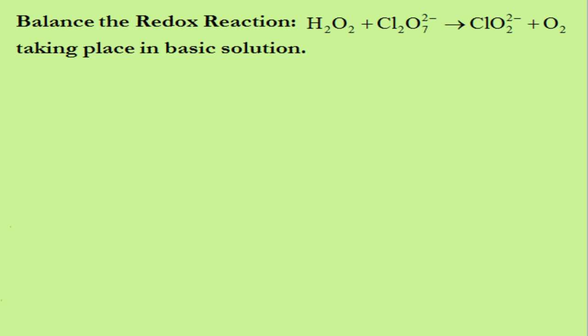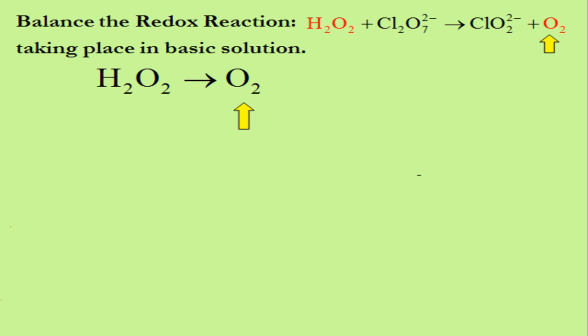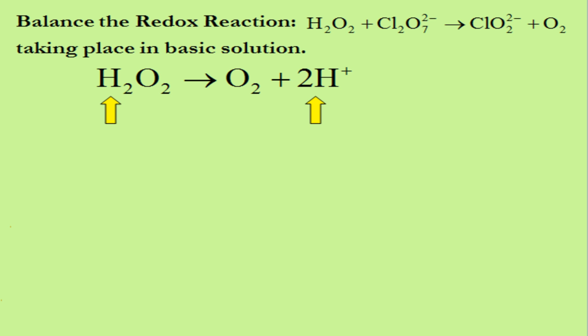We start by breaking this reaction up into two half-reactions. The H₂O₂ on the left forms O₂ on the right. We balance the skeleton half-reaction using the rules of balancing half-reactions. There are no elements other than oxygen or hydrogen, so we start with the oxygen. There are two oxygens on both sides, so oxygen is already balanced. Next we balance hydrogen atoms. There are two hydrogens on the left and none on the right, so we add two H⁺ on the right side.